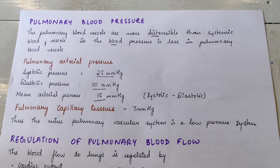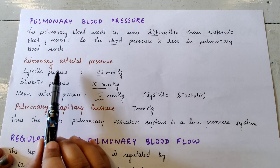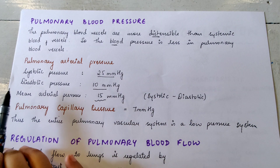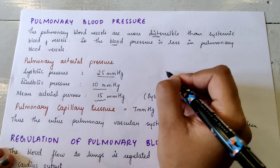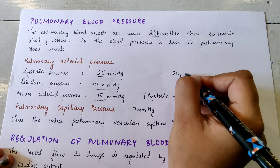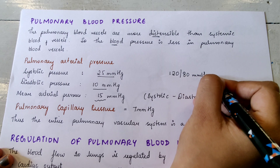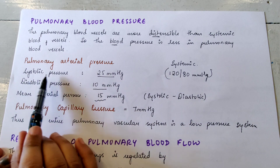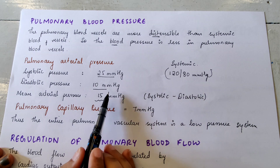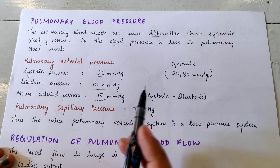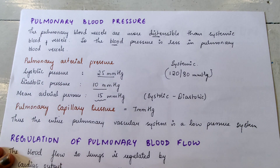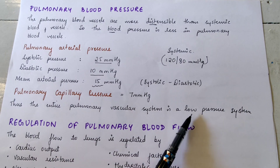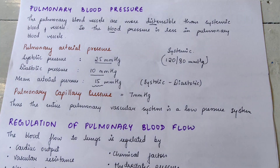Now, do you remember the systolic pressure of the systemic arterial system? The normal systemic systolic pressure is 120 mmHg and diastolic is 80 mmHg. Compare that to the pulmonary systolic of just 25 mmHg and diastolic of 10 mmHg — the pressure in the systemic arteries is so much more. The pulmonary capillary pressure is 7 mmHg, and thus the entire pulmonary vascular system is a low pressure system.